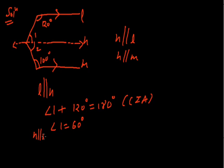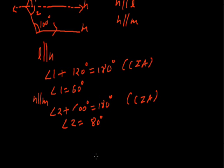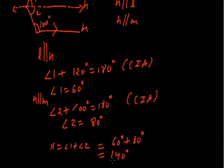The auxiliary line is also parallel to M, so angle 2 plus 100 degrees equals 180 degrees because they also form co-interior angles. Therefore angle 2 equals 80 degrees. The value of X is the sum of angle 1 and angle 2: 60 plus 80 equals 140 degrees. So the answer is X equals 140 degrees.